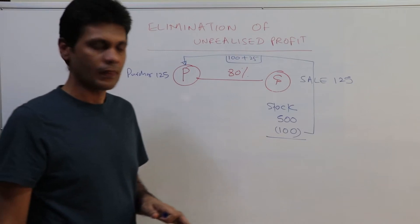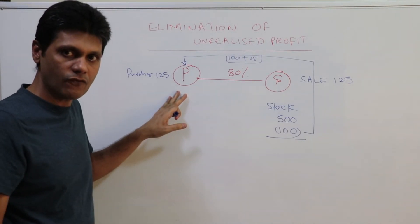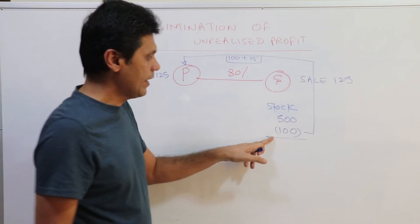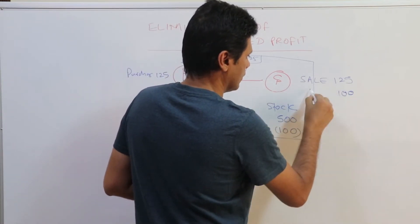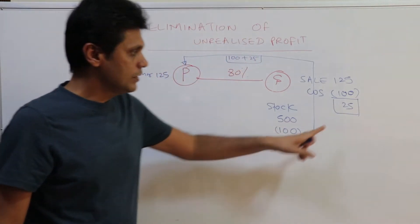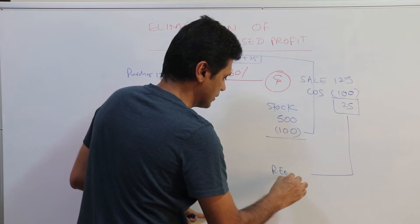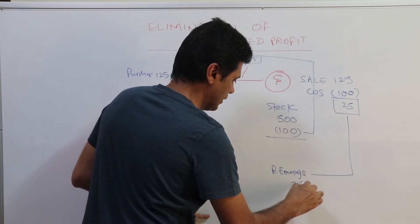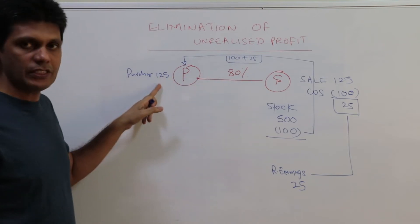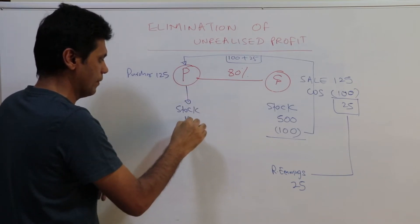Since S has sold goods to P, S company has recorded the profit. The sales value is $125 whereas the cost of sales is $100, so the profit is $25. This profit will be recorded in the books of S under retained earnings — retained earnings $25. Since P company has purchased this for $125, it will be recorded under the stocks of parent company at $125.